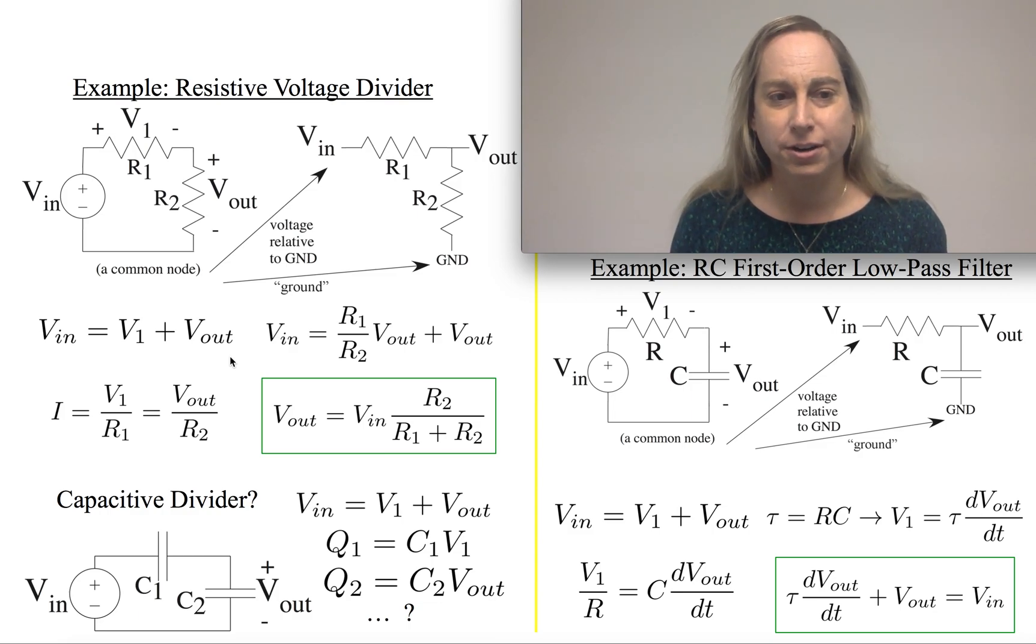The other thing we have to work with is that the current in this resistor is going to be the voltage over resistance. Remember, voltage is current times resistance. And in this one, it will be the voltage, which I'm calling Vout, and it's going to be that over R2.